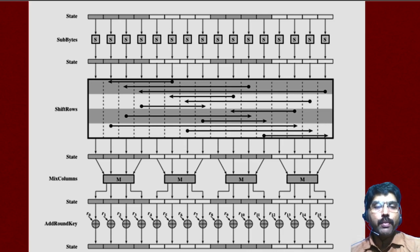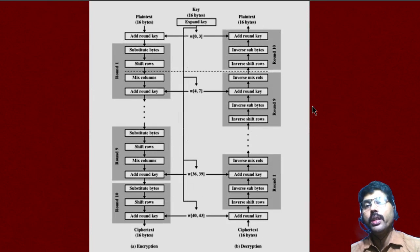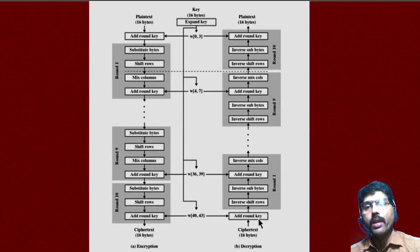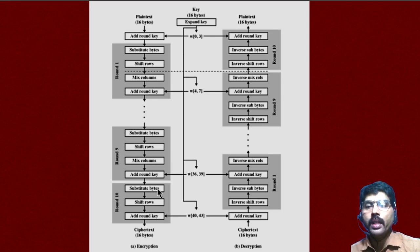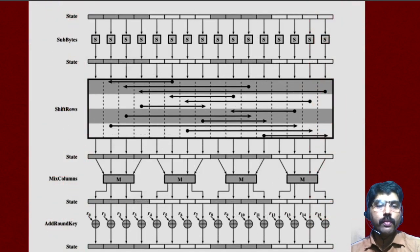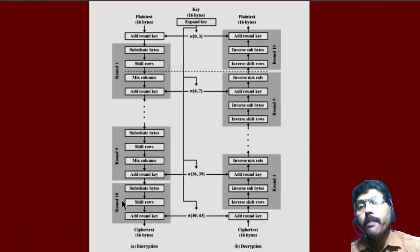In both encryption and decryption, the cipher begins with the add round key stage — add round key is the first step. Also, in the last round we are not having the mixed columns step. Only three steps are available in the last tenth round. All nine rounds contain four stages, but the last round — the tenth round — contains only three stages, with mixed column removed.